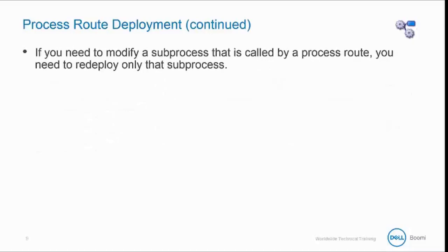If you need to modify a subprocess that is called by a process route, you need to redeploy only that subprocess. You do not need to modify or redeploy the parent process or the process route component. However, any changes that you make to the subprocess must be compatible with the overall design of the parent process.